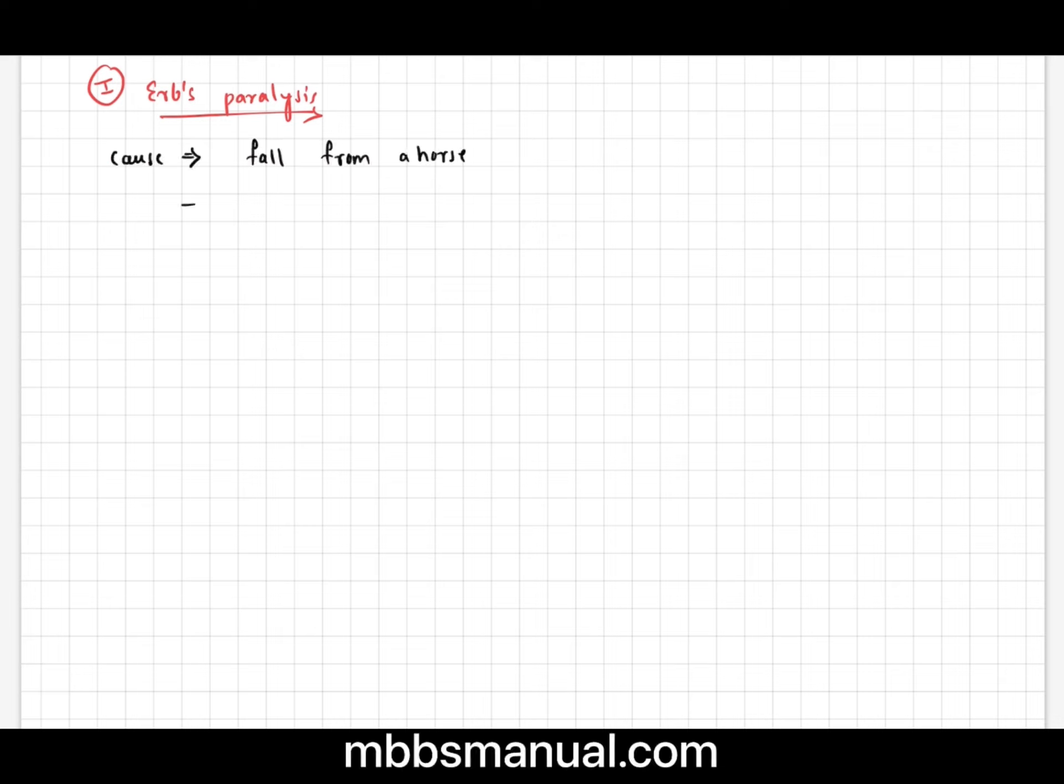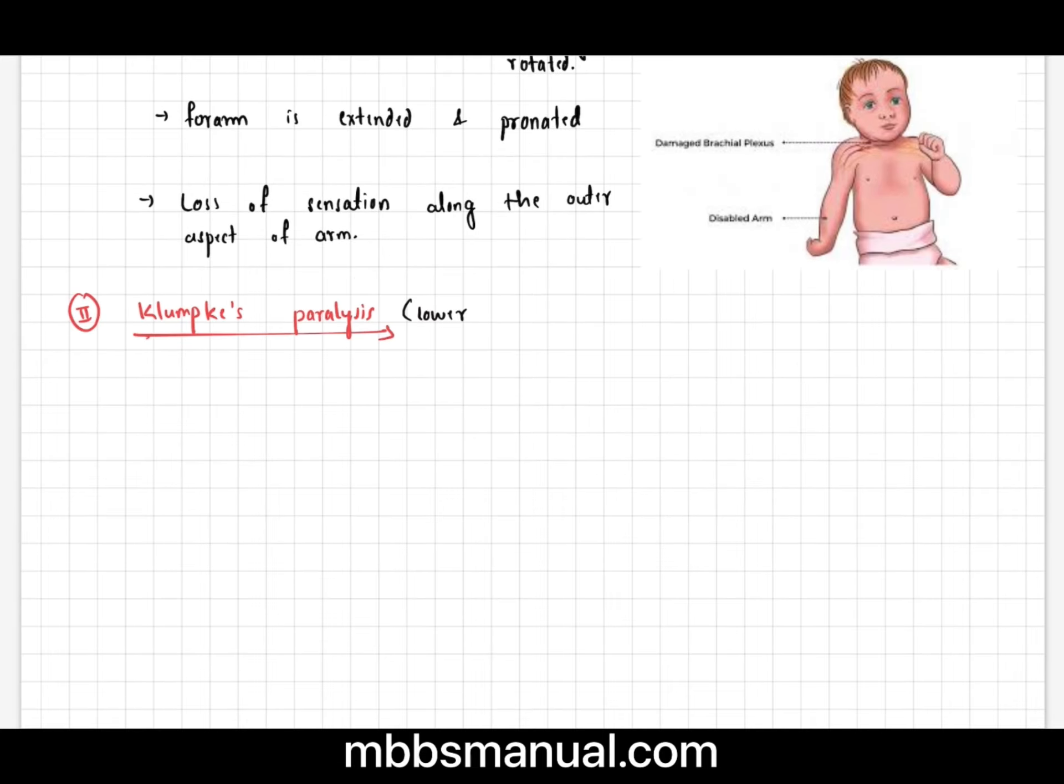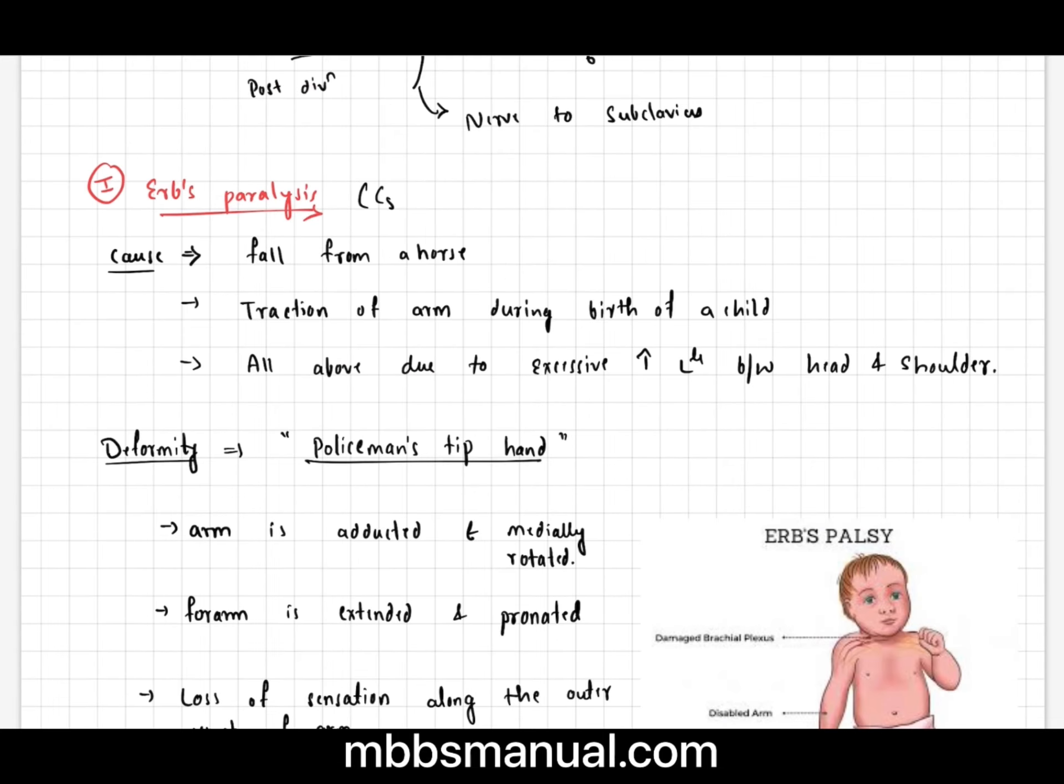Erb's paralysis is mainly caused due to excessive increase in the angle between the head and shoulder. It forms a typical deformity called the policeman's tip hand. In this deformity, the arm is adducted, medially rotated, and the forearm is extended and pronated, with loss of sensation along the outer aspect of the arm.